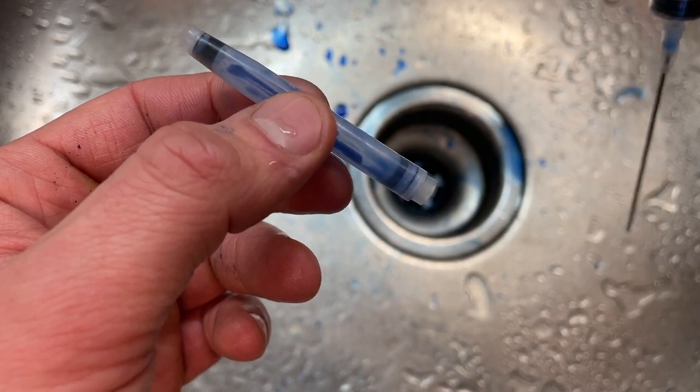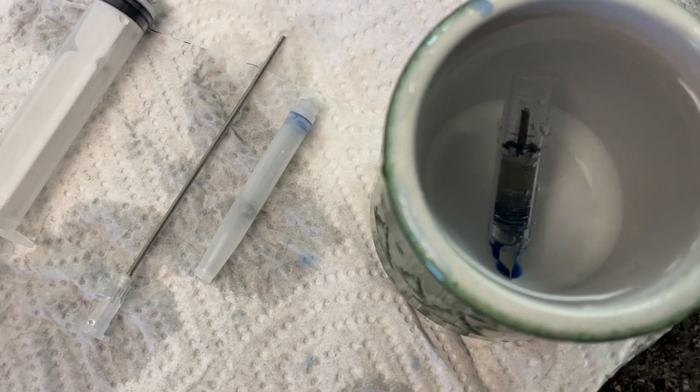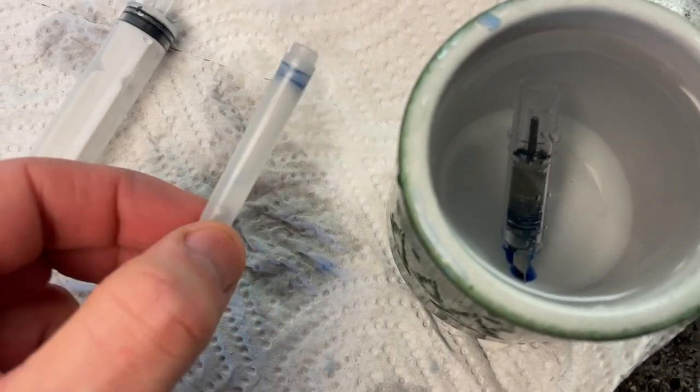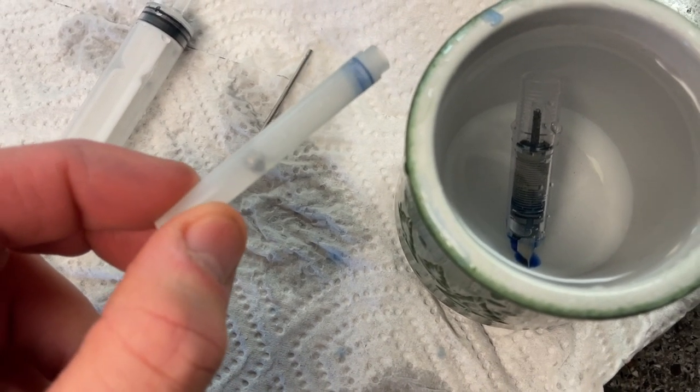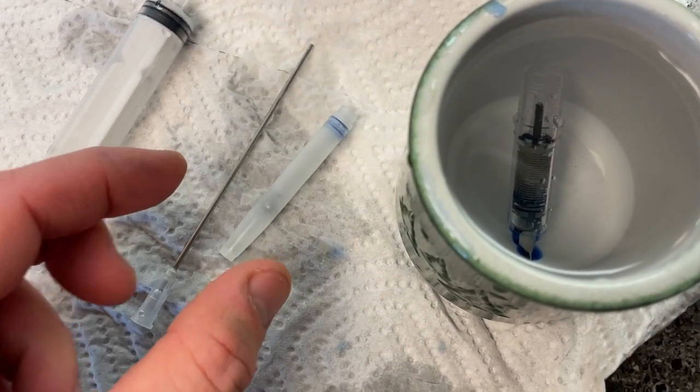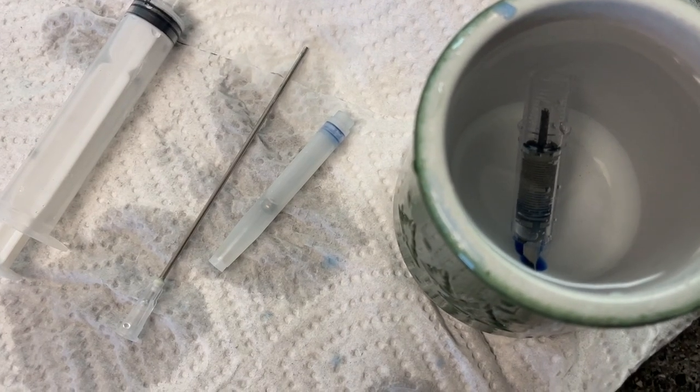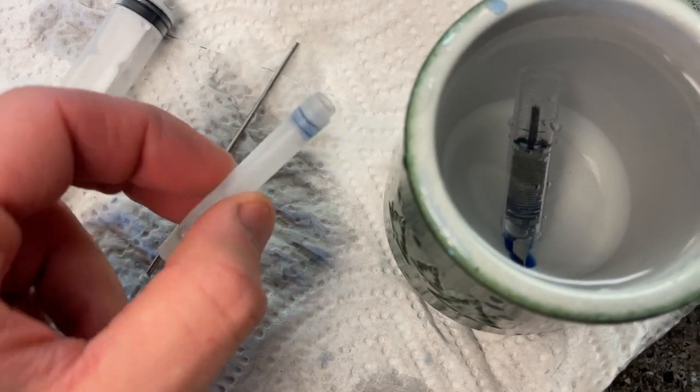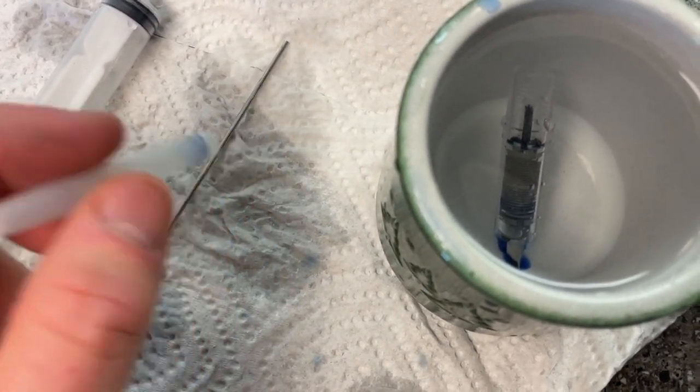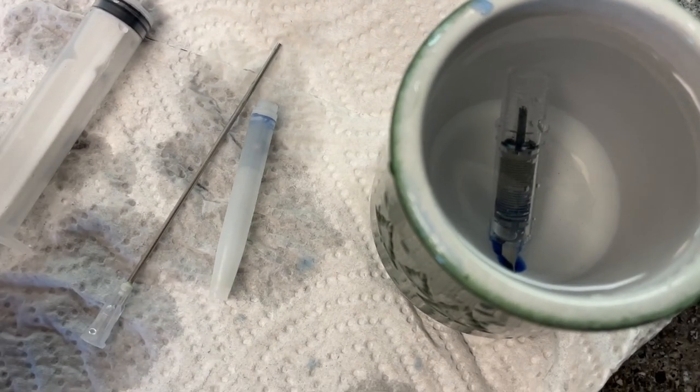But again, it doesn't have to be perfect. So after about five minutes of cleaning, we have a relatively clean fountain pen cartridge. Not immaculate, but good enough. And this is going to dry out on its own. You could also try to stick a Q-tip or something in there to get any excess water. But mainly shaking it will do the job.